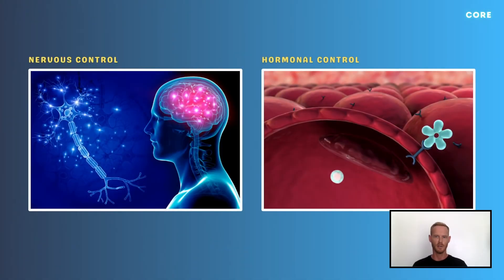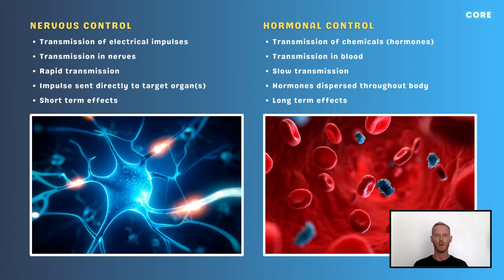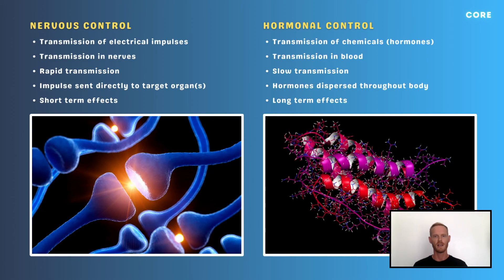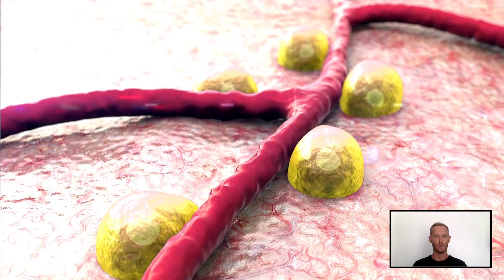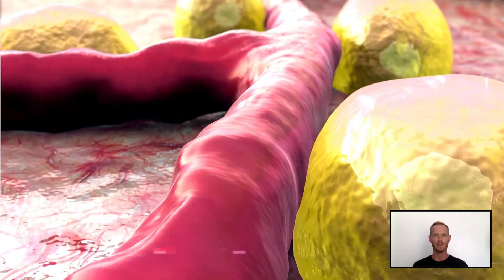Finally, you need to compare the two communication systems of the body. Coordination by the nervous system is both rapid and precise, as electrical impulses travel extremely quickly along neurons and stimulate target organs directly. The endocrine system by comparison is much slower, as the movement of hormones in the blood from glands to target organs takes time. It's also less direct, as hormones are dispersed throughout the body and can affect multiple organs concurrently. In addition, the effects of the endocrine system last much longer than the immediate effects of the nervous system, as it takes time for hormones to be broken down and excreted. For example, the hormone insulin typically remains in the blood for around six to eight hours after it's released.